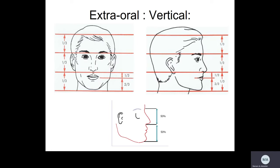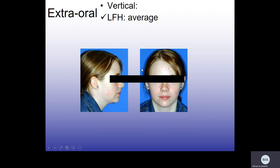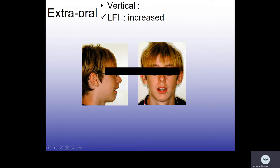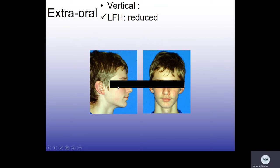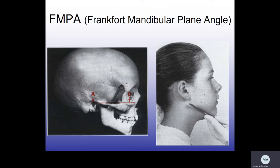For the vertical dimension, we assess the lower facial height. The lower facial height should be approximately equal to the middle facial height — a 50/50 ratio. If it's more, the lower facial height is increased; if less, it's reduced. The lower facial height is measured from subnasale to menton, and the mid facial height from glabella to subnasale. This patient has an average lower facial height; this one has an increased lower facial height; and comparing mid to lower, this patient has a reduced lower facial height.